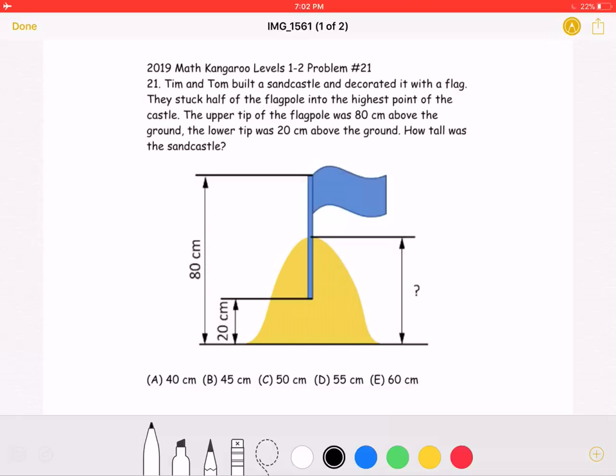How tall was the sandcastle? A, 40 cm, B, 45 cm, C, 50 cm, D, 55 cm, or E, 60 cm.